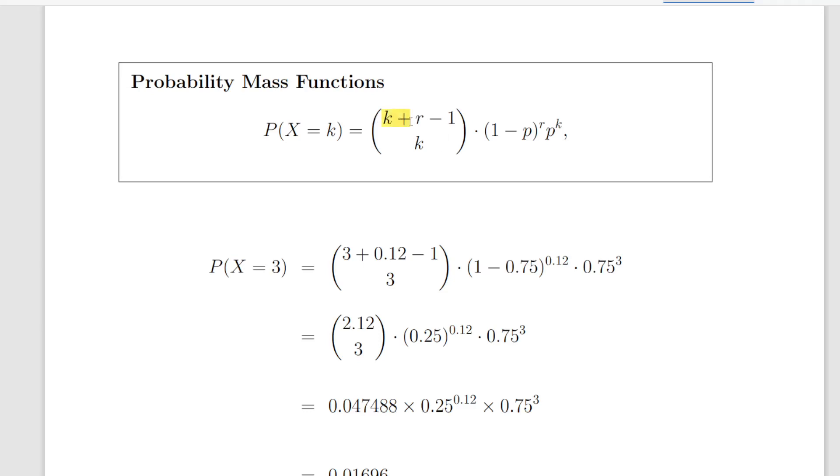What we have here is a binomial coefficient of k plus r minus 1 and k. So from k plus r minus 1, choose k. 1 minus p to the power of r, and times p to the power of k. Now, that part here, 1 minus p to the power of r, that is 1 minus 0.75 to the power of 0.12.